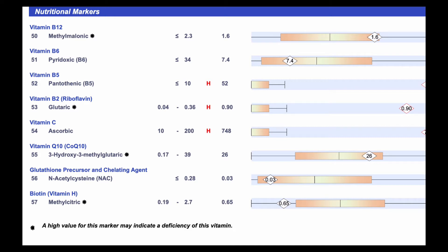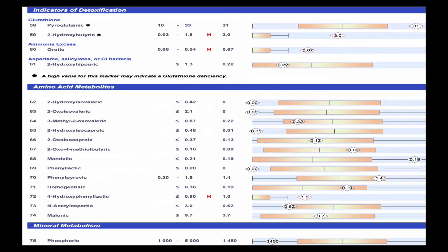Numbers 50 to 57 look at some of the nutritional markers. You've got B12 — this is a more accurate marker than a B12 blood test because it's looking at how the cells are utilizing B12. You also have B6, B5, B2, coenzyme Q10, and vitamin C. On the last page, we've got detoxification markers for glutathione and how the body is processing ammonia. High levels there can lead to chronic fatigue and fibromyalgia, and you've got markers of GI bacteria and salicylates here.